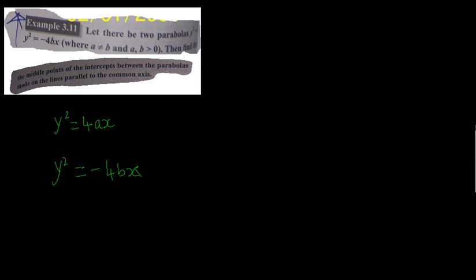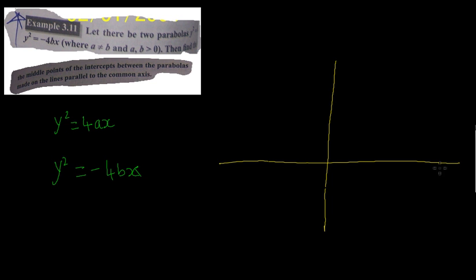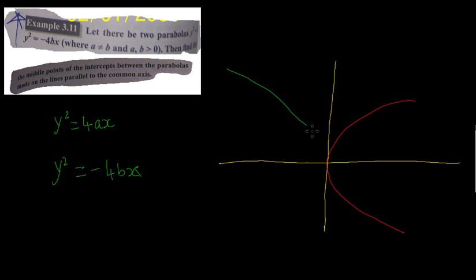Let's draw these two parabolas. This is the coordinate axis. The first parabola y² = 4ax opens to the right and will look something like this. The second parabola y² = -4bx opens to the left and will look something like this. Depending on b, you will have a focus at a different point — they won't be totally symmetric.